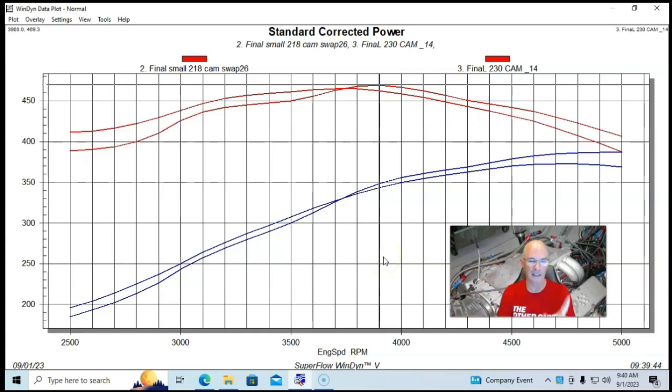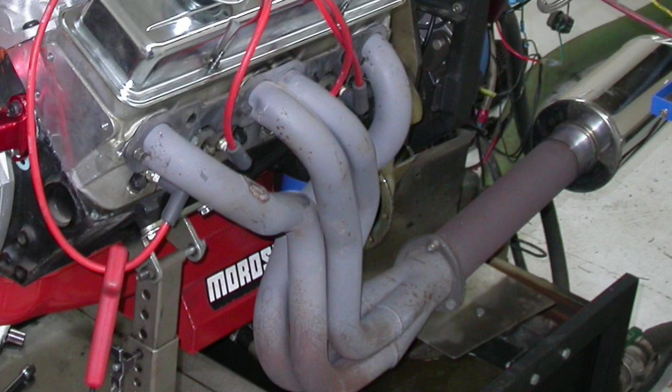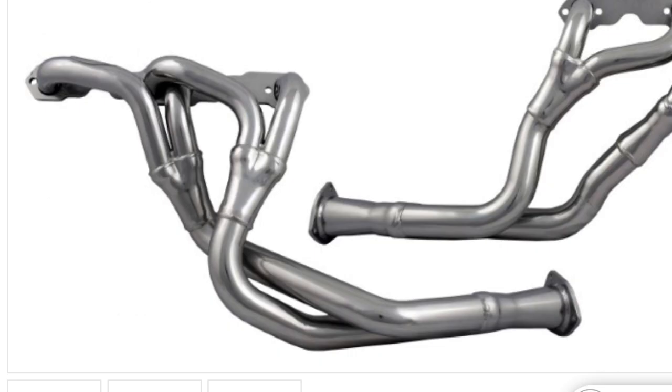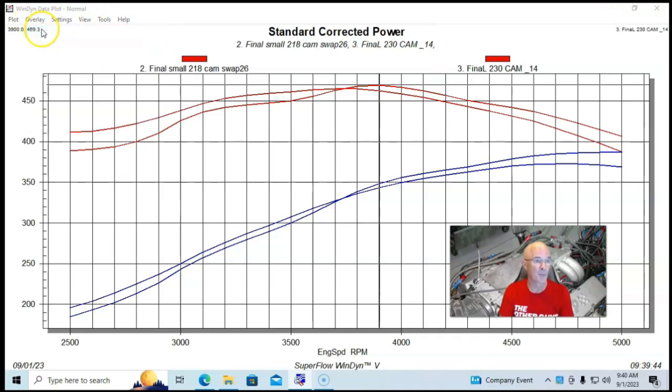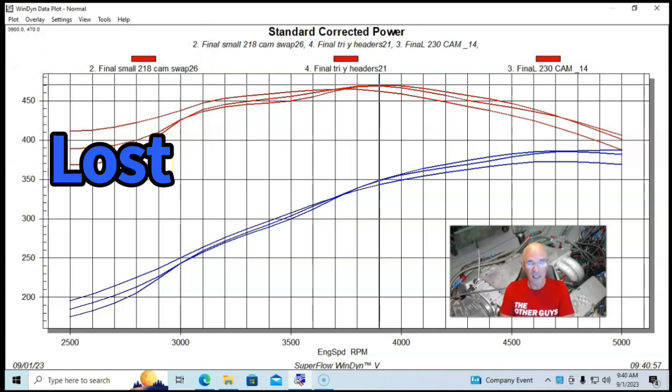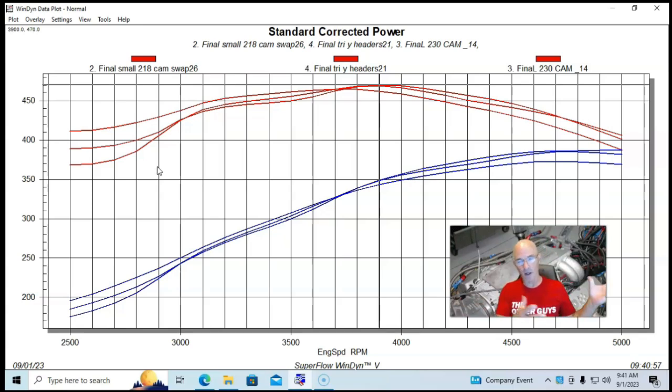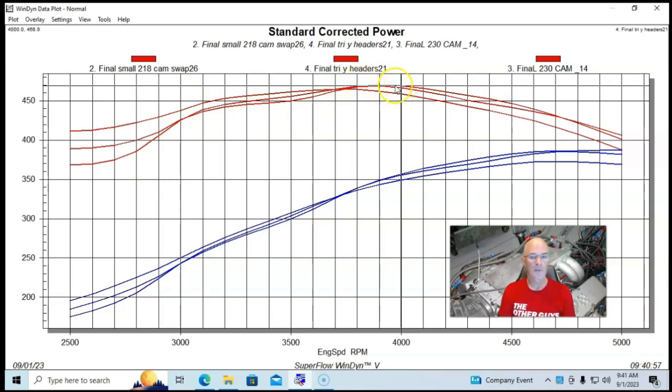This was with long tube headers, four into ones. We thought, maybe we lost too much low-speed power and we could put the Tri-Y headers back on here. So we ran another header test and put Tri-Y headers on this combination. The interesting thing is that we actually lost low-speed torque below 3,000 RPM with the Tri-Y. So everyone's telling you you get all kinds of low-speed power with Tri-Y, not on these two sets. The Tri-Y did gain torque from 3,000 up to about 3,700 RPM, and the peak torque numbers were about the same. The Tri-Ys were inch and five-eighths, the long tube four into ones were inch and three-quarters.